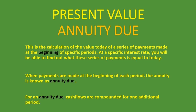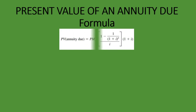So what is the formula for the present value of an annuity due? Here it is: Present value of an annuity due equals PMT times 1 minus the sum of 1 divided by (1 plus I) to the power of N, divided by I, and then multiplied by one additional period of (1 plus I). Without this additional period, this would have been the present value of an ordinary annuity. By adding one more additional period, it becomes the present value of an annuity due.